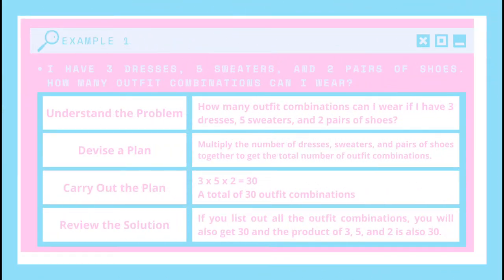Let's try to solve this problem using this table. I have 3 dresses, 5 sweaters, and 2 pairs of shoes. How many outfit combinations can I wear? To understand the problem, if I restate it, it will be like this: How many outfit combinations can I wear if I have 3 dresses, 5 sweaters, and 2 pairs of shoes? It is shorter and easier to understand.